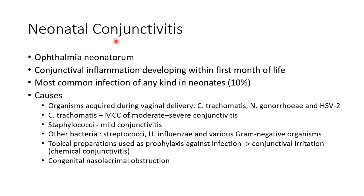Now let us discuss about neonatal conjunctivitis, also known as ophthalmia neonatorum. It is conjunctival inflammation developing within the first month of life. It is the most common infection of any kind in neonates, with almost 10% of neonates affected. It can be due to organisms acquired during vaginal delivery — Chlamydia trachomatis, Neisseria gonorrhoeae, and Herpes simplex virus type 2. Chlamydia trachomatis is the most common cause of moderate to severe neonatal conjunctivitis.